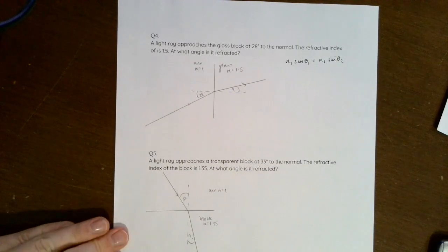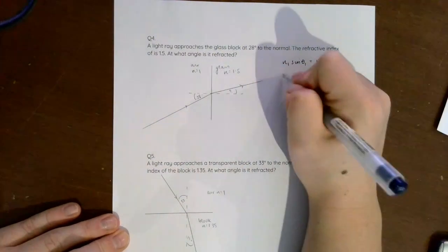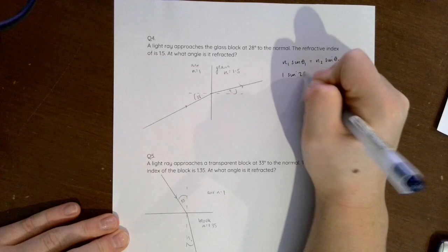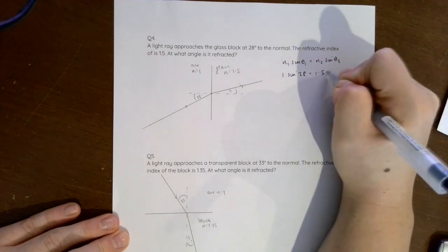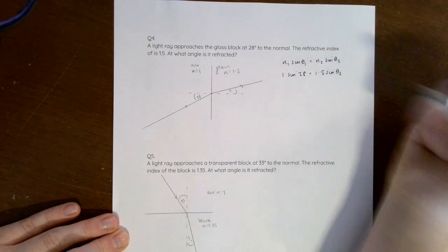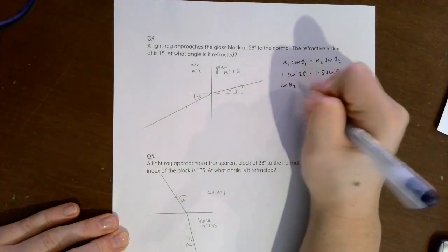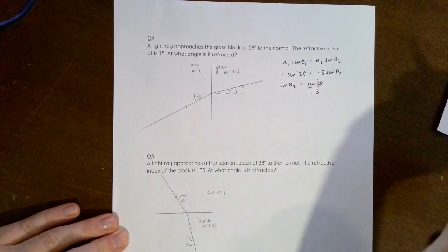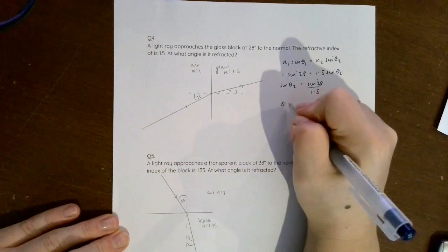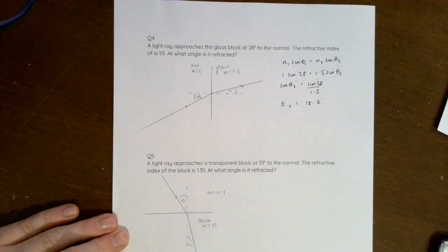So we've got going from air into glass, so we've got 1 sin 28 equals 1.5 sin θ₂. So sin θ₂ equals sin 28 over 1.5. A bit of number crunching gives me θ₂ is equal to 18.2 degrees.